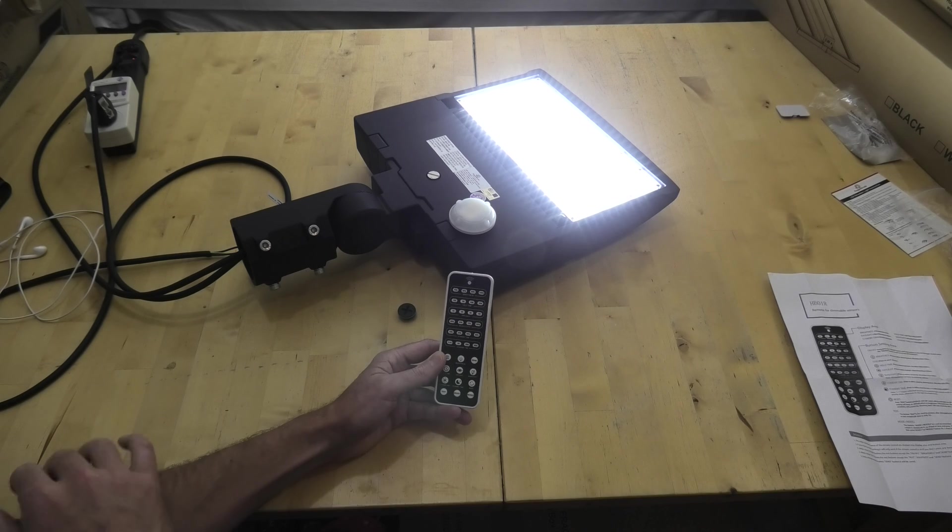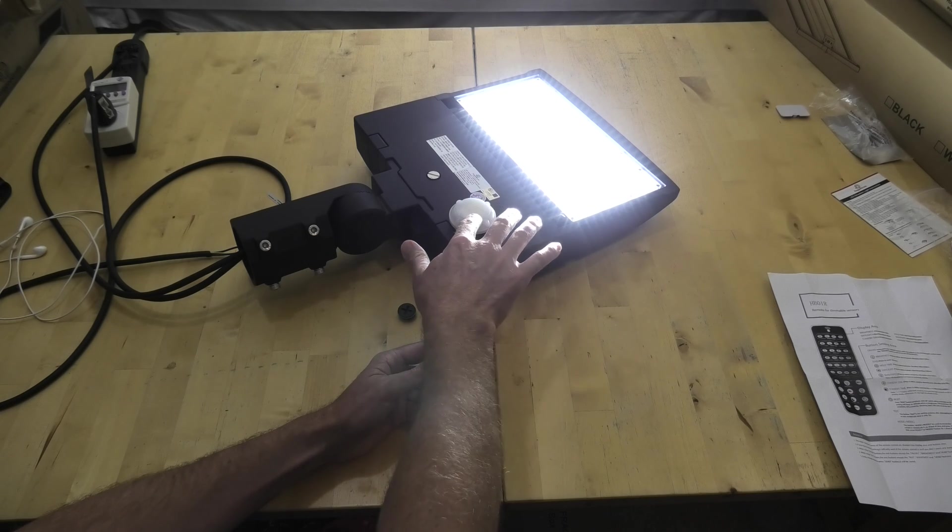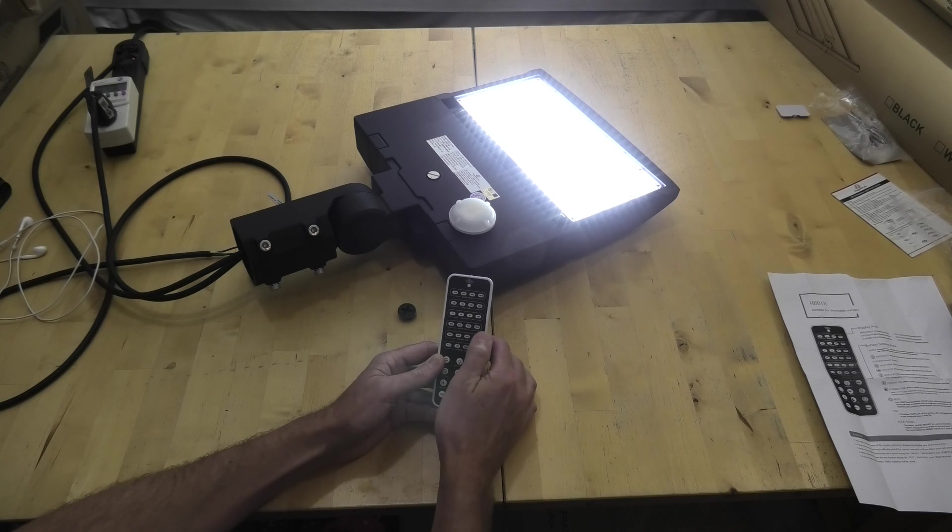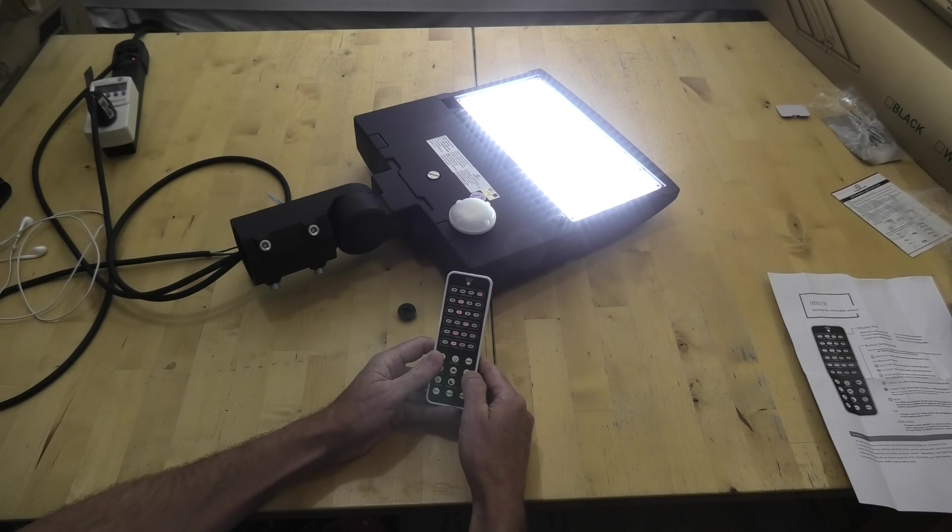So if it's coming on during a foggy day or a cloudy day or coming off too early, then you can adjust that daylight setting to adjust how sensitive that is. Again, sensitivity is how sensitive the sensor is. So if you're picking up too many objects at 100%, you might want to come back down to say 75% to adjust the sensitivity just down a little bit.